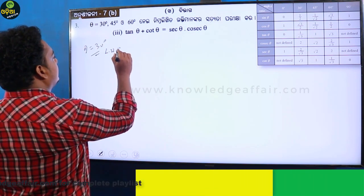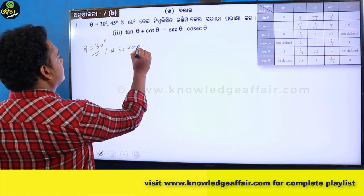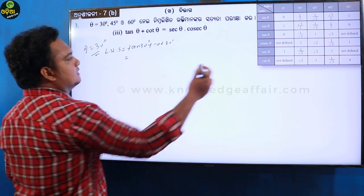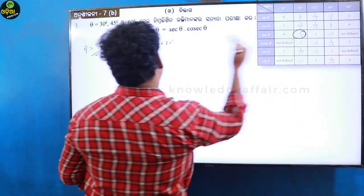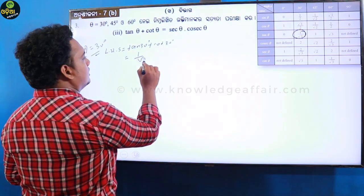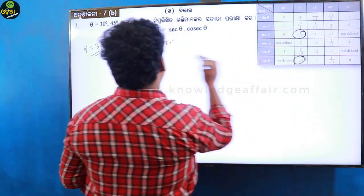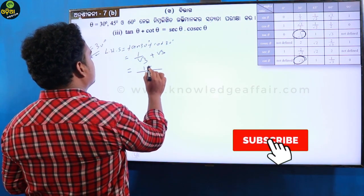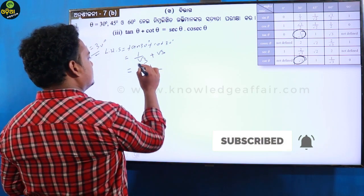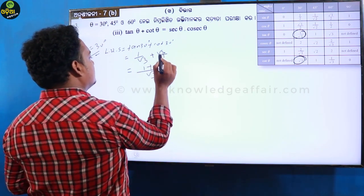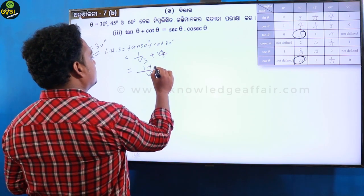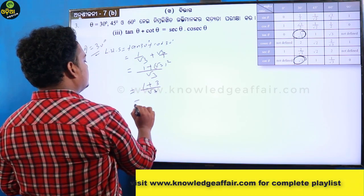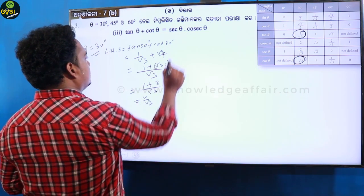LHS equals 1 over tan 30 plus cot 30. The value of tan 30 is 1 by root 3, and cot 30 is root 3. Taking LCM root 3, we get 1 divided by root 3 plus root 3 into root 3. Root 3 into root 3 is root 3 squared, which equals 3. So 1 plus 3 over root 3 equals 4 by root 3.